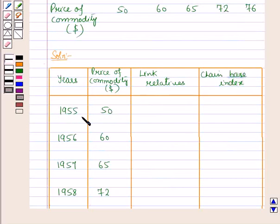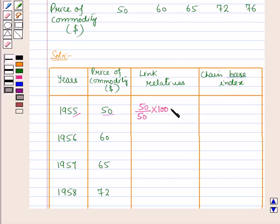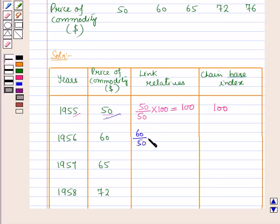The link relative for 1955 is equal to the current year's price (50) over the previous year's price (50), since the first year is the base year for itself, into 100, which equals 100. For 1956, the base year is 1955, so the link relative equals 60 over 50 into 100, which equals 120.